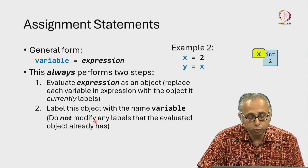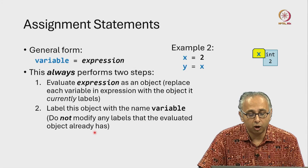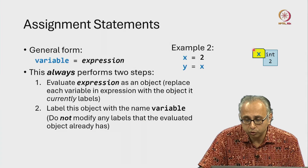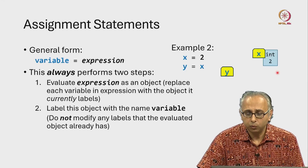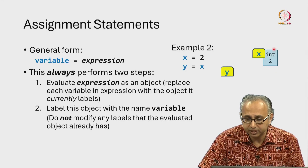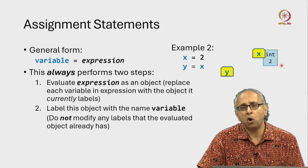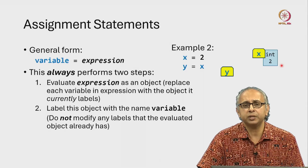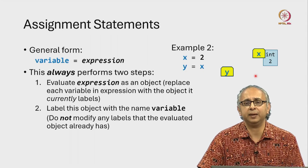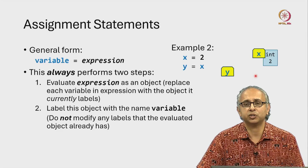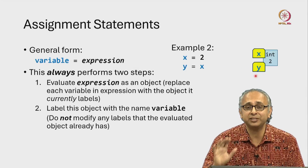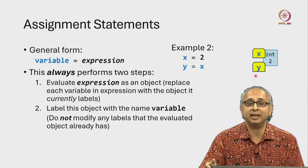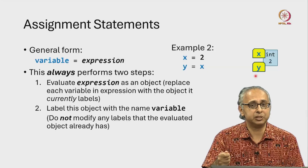The rule says: do not move any labels that the evaluated object already has. So we are not going to move x. But we do have to attach y. We have to label this object — but this object already has a label. So what does it mean to label it with y? Well, it just means put this label on the object. It does not matter if that object already has a label — you can have an object with multiple labels on it.